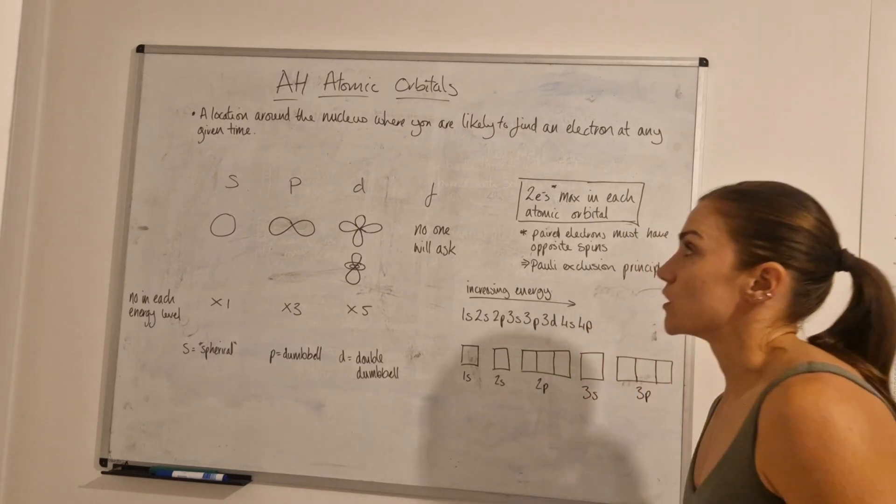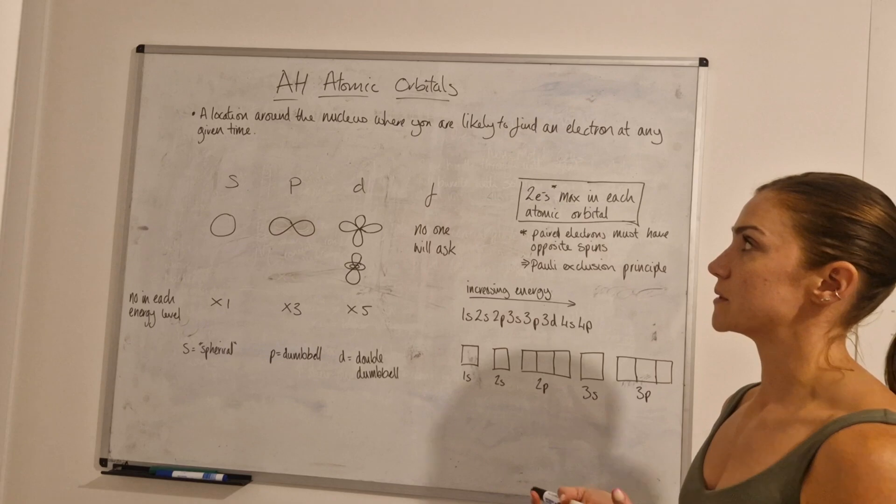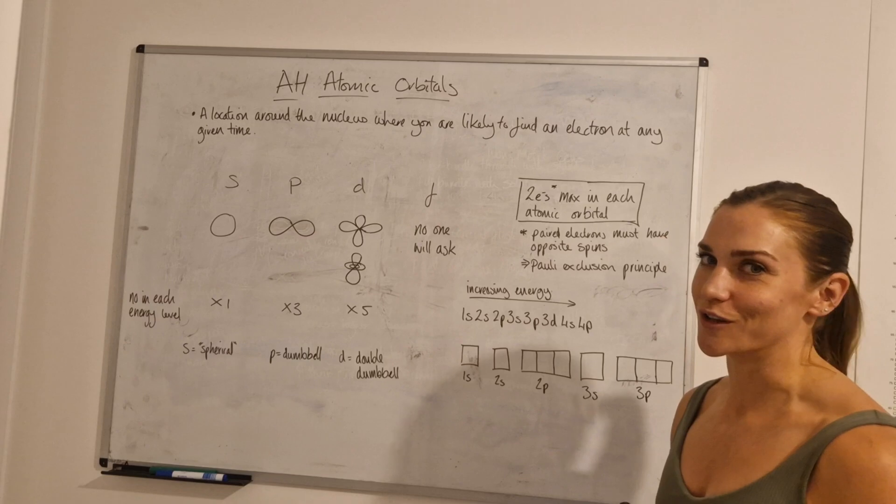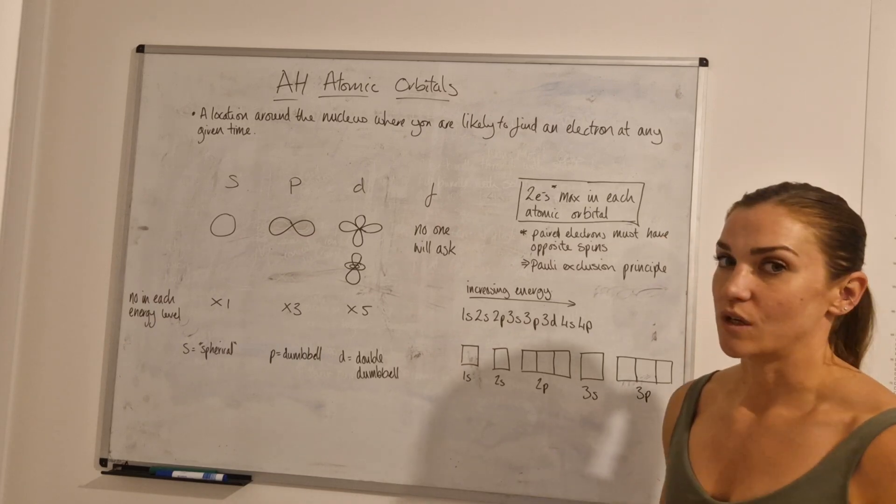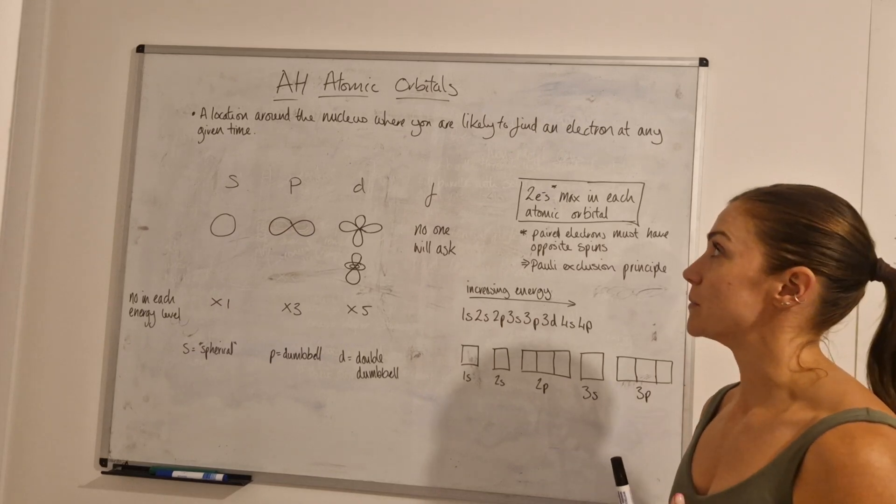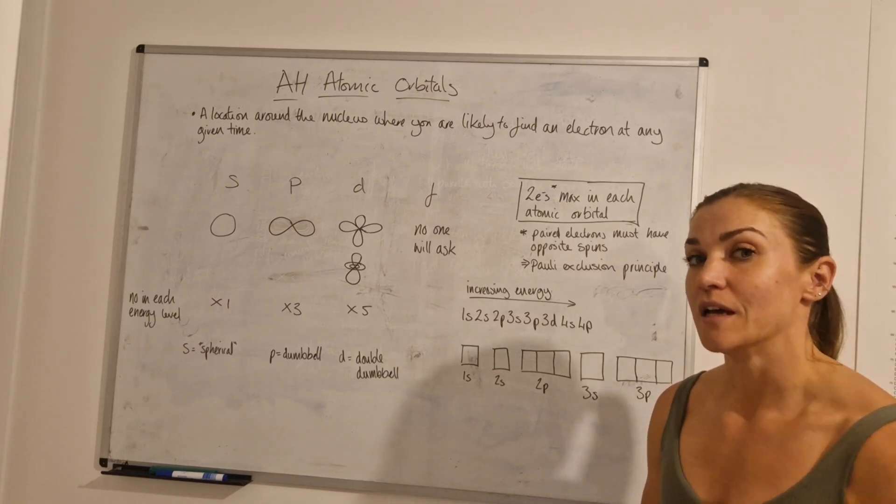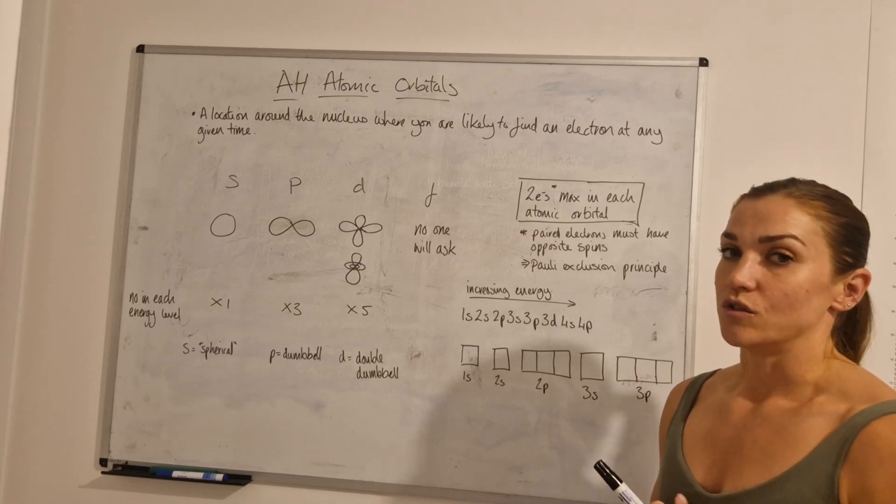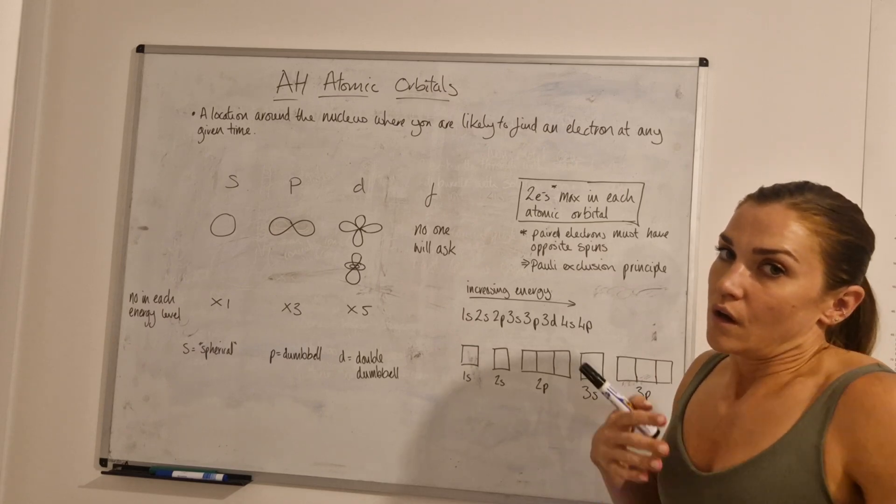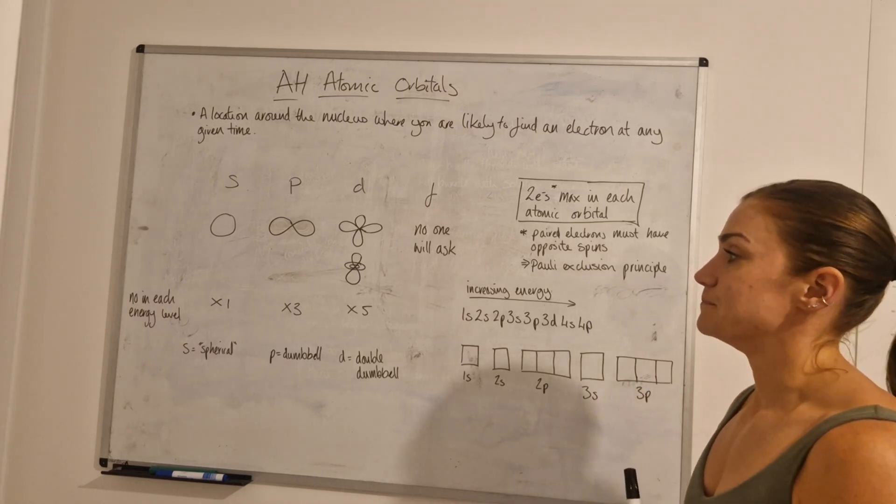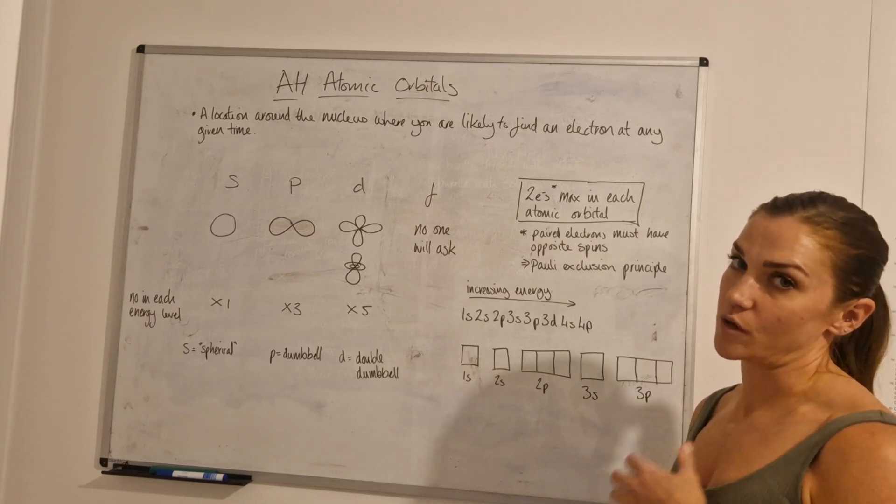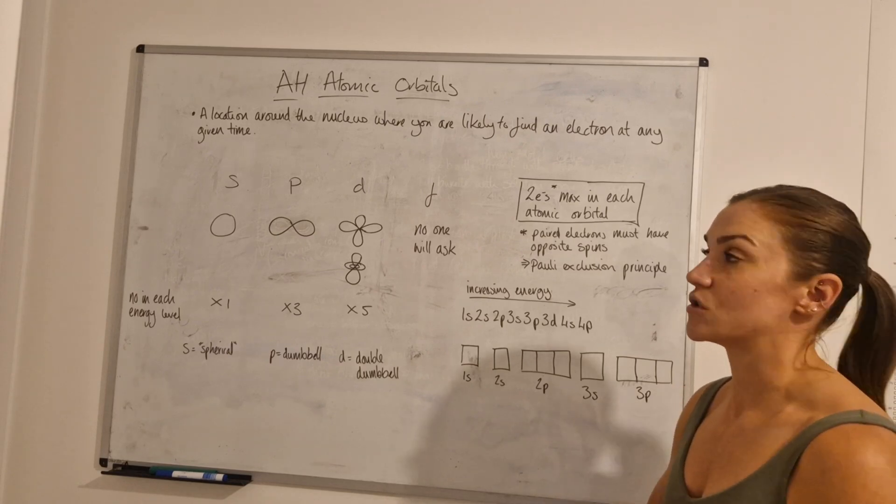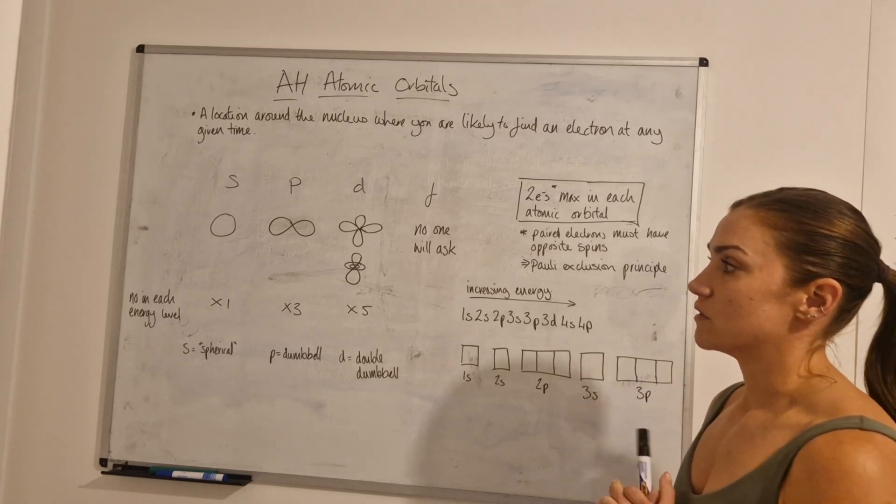First, we're going to start by talking about what an atomic orbital is. It's unlikely they'll actually ask you this, but it's always good to know what these words you're learning about actually are. An atomic orbital is essentially just a location somewhere around the nucleus where you have the probability of finding an electron at a given time. There are equations that chemists use, like Schrodinger's equation, which is more to do with where those electrons are located. There are mathematical formulas used in relation to this, but you won't use any of the maths in advanced higher, we'll just talk about the surface level theory behind it.